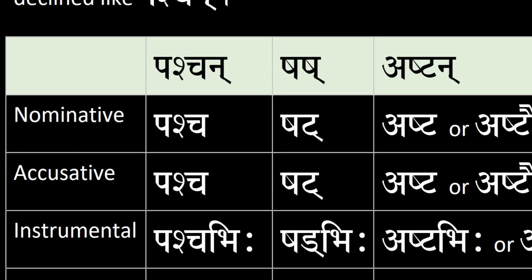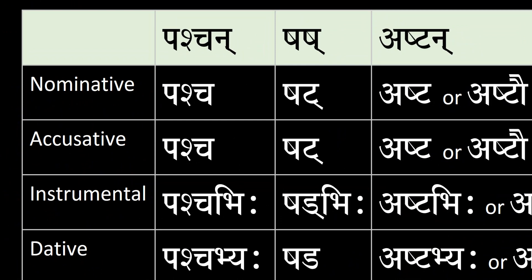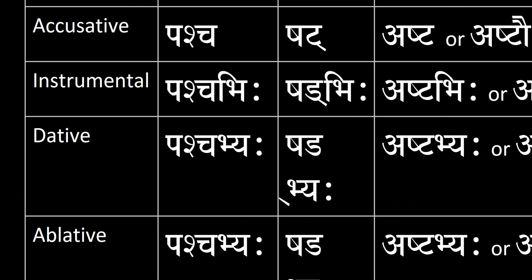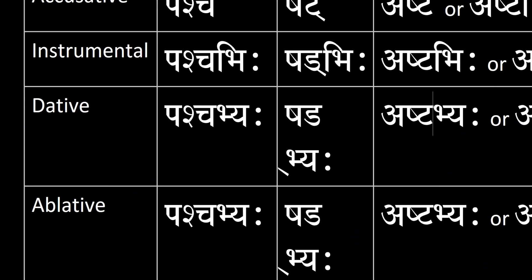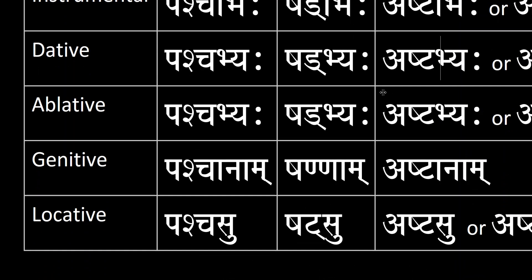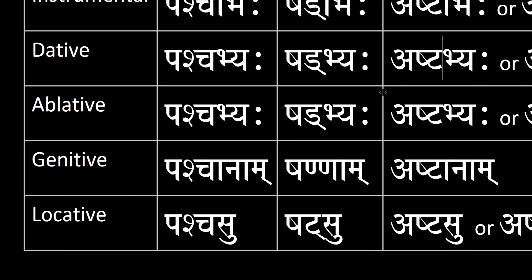Now, the declension of number 6. Six in Sanskrit is Ṣaṣ. Nominative is Ṣaṭ. Accusative is Ṣaṭ. Instrumental is Ṣaḍbhihi. Dative is Ṣaḍbhyaha. Ablative is Ṣaḍbhyaha. Genitive is Ṣaṇṇam. Locative is Ṣaṭsu.